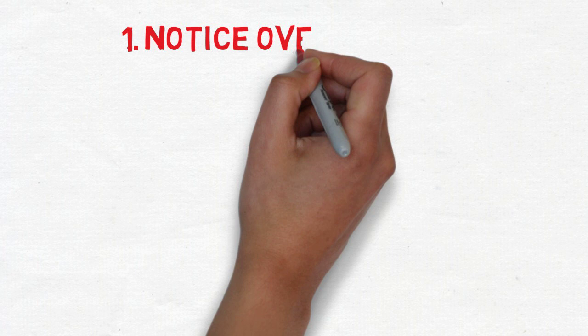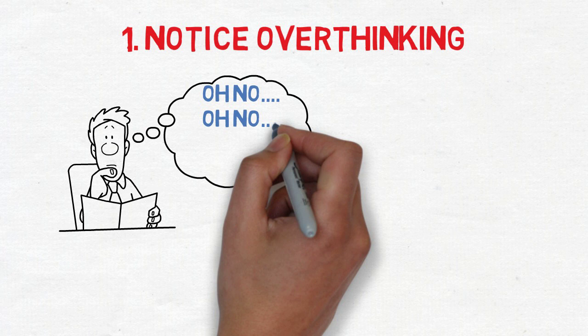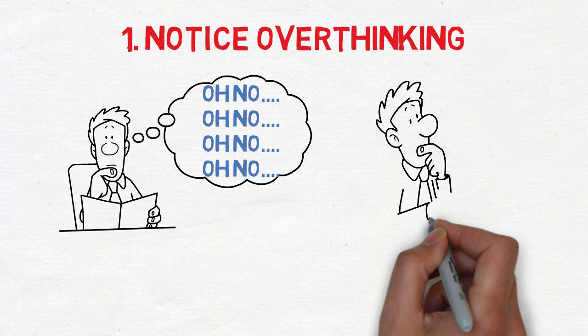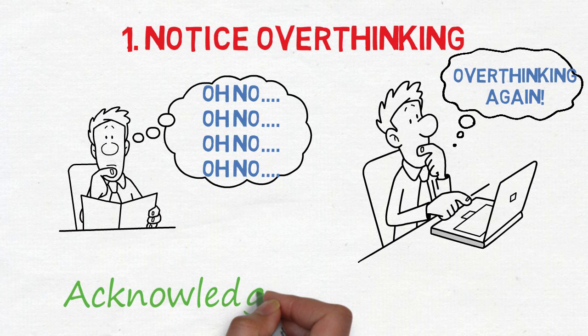First, notice when you're overthinking. For you to stop overthinking, the first step is noticing when you are doing it. For chronic overthinkers, it becomes such a normal thing that they don't even realize they're doing it. But when you realize that you are worried about future events, or that you're dwelling on something that has already happened, acknowledge it and force yourself to focus on something else. Use the rest of these strategies coming up to move on.